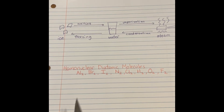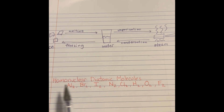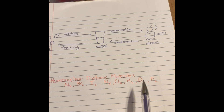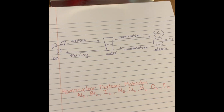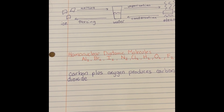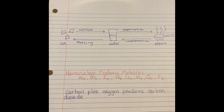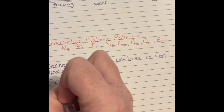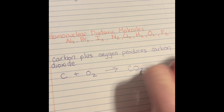Before we jump into it, I just want to review your homonuclear diatomic molecules, which you guys should have memorized. All of these exist in nature as homonuclear diatomic. So oxygen in nature is going to be O2, fluorine in nature is going to be F2, etc. So when we burn coal, it mixes with oxygen to make carbon dioxide, and this change also produces energy. You can write this down as: carbon plus oxygen produces carbon dioxide.